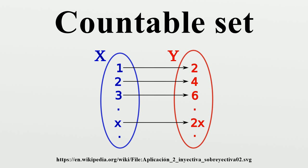Theorem: The Cartesian product of finitely many countable sets is countable. This form of triangular mapping recursively generalizes to vectors of finitely many natural numbers by repeatedly mapping the first two elements to a natural number. Sometimes more than one mapping is useful. This is where you map the set you want to show is countably infinite onto another set, and then map this other set to the natural numbers. For example, the positive rational numbers can easily be mapped to pairs of natural numbers because p/q maps accordingly.